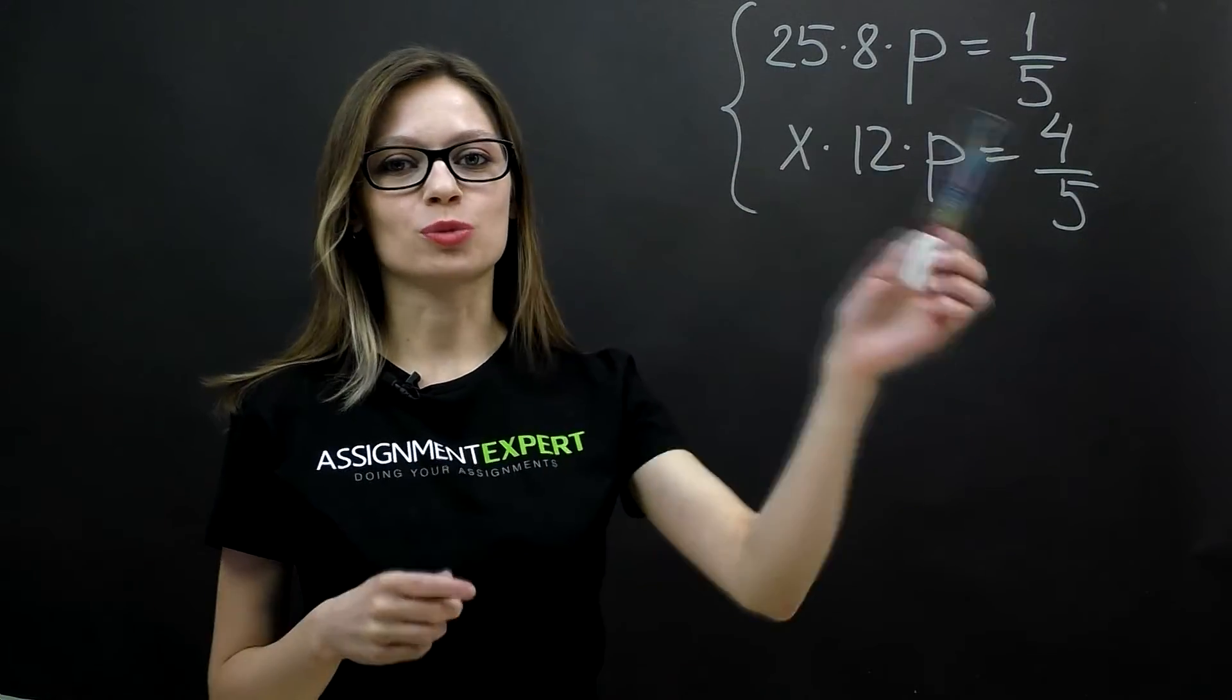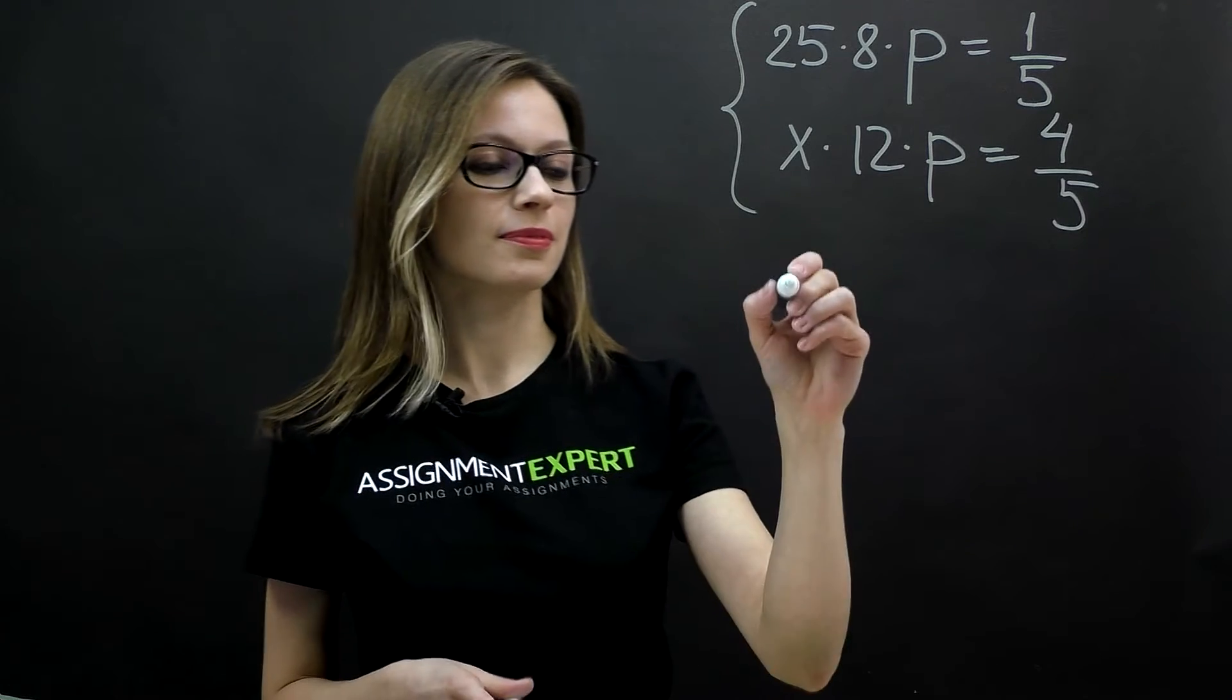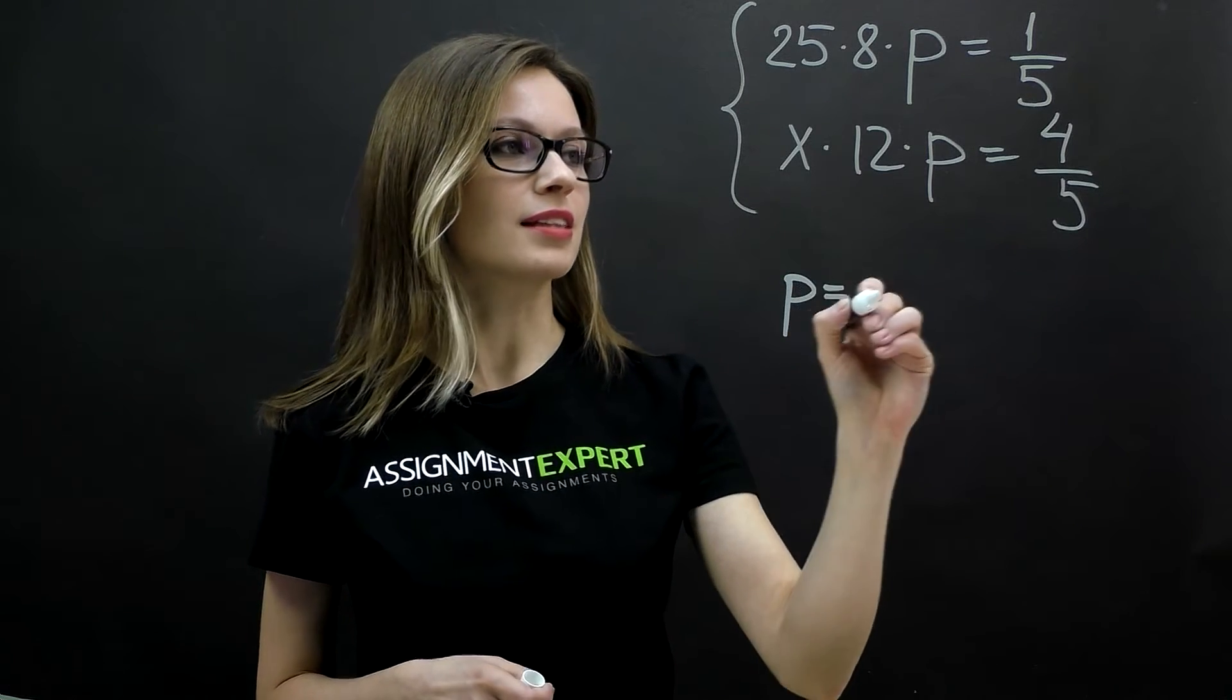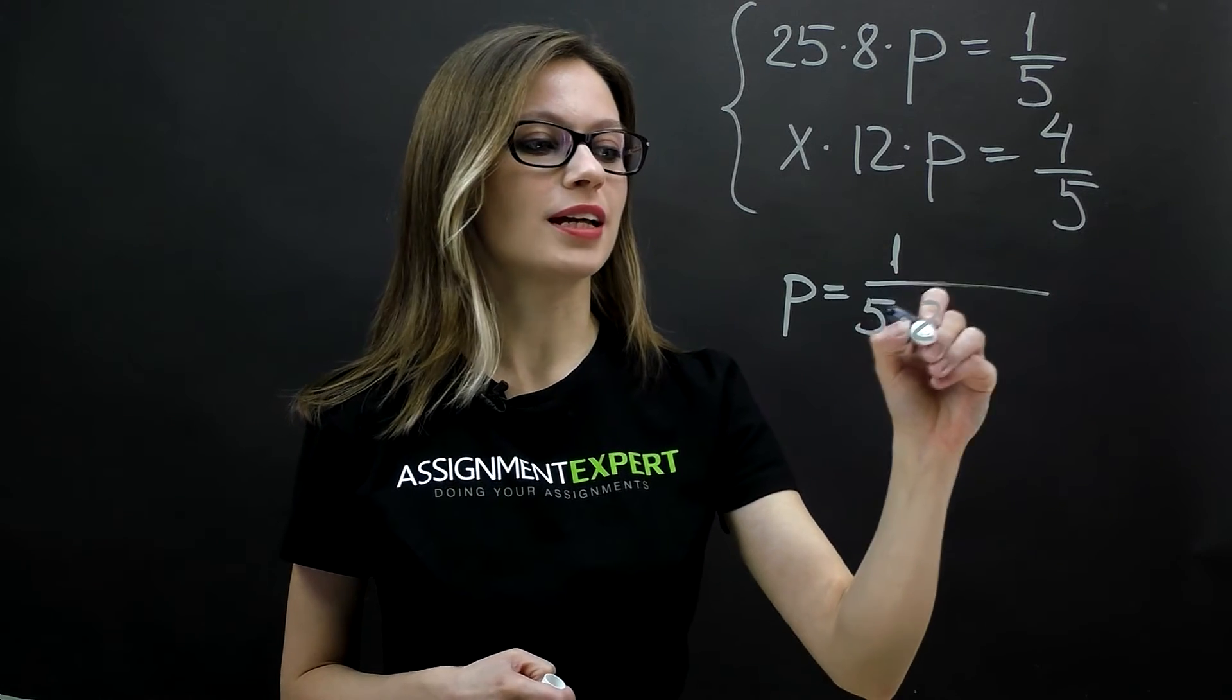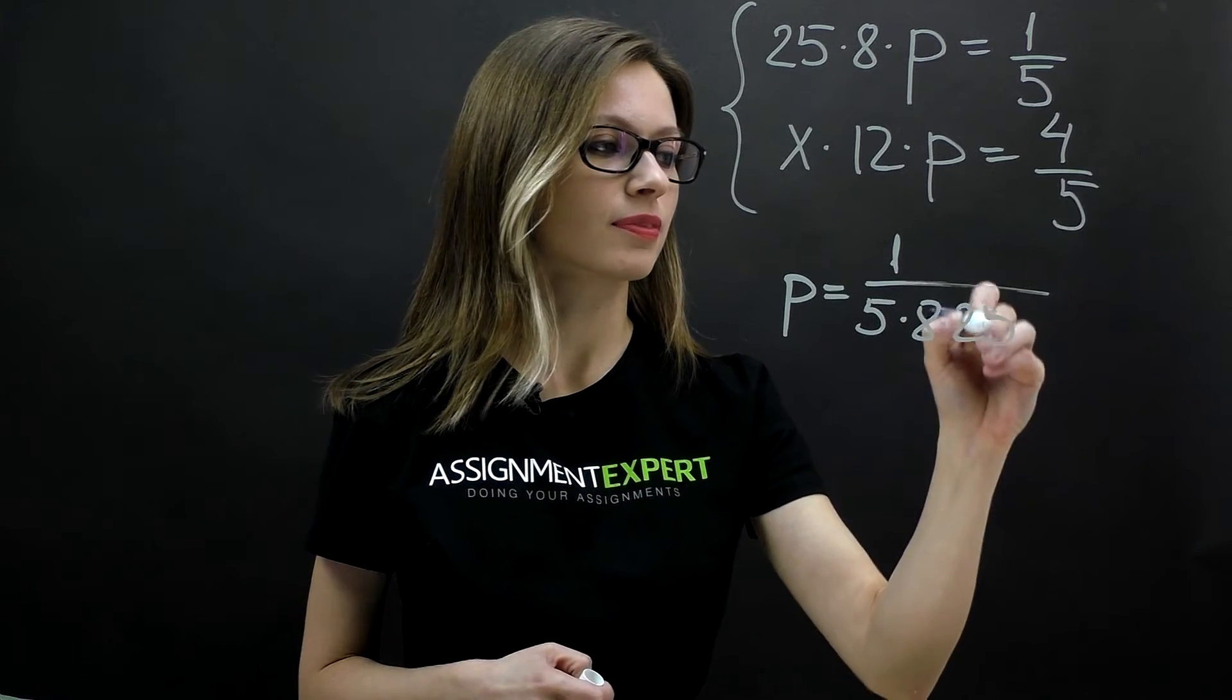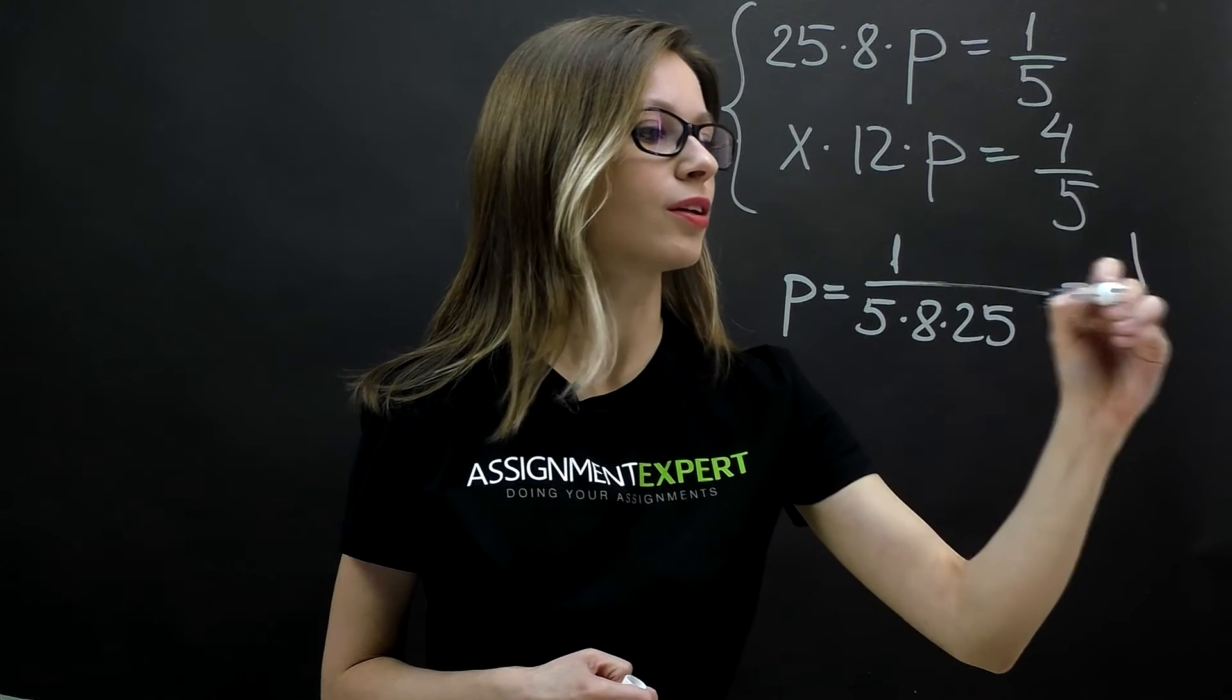So out of the first equation we derive p. And that is equal to 1 over 5 times 8 times 25. And that is equal to 1 over 1000.